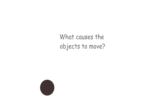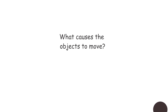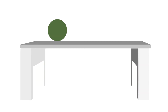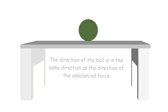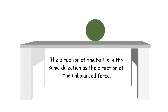What causes an object to move? Consider a ball placed on the table. How can you make the ball move? In what direction will it move? A force is needed to make the ball move. When a force is applied to the ball, it moves in the same direction as the force applied.